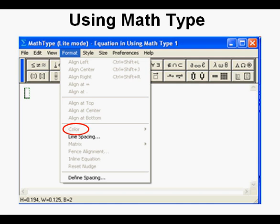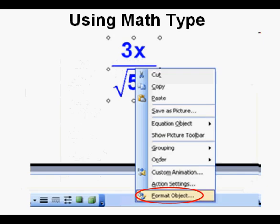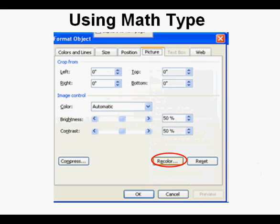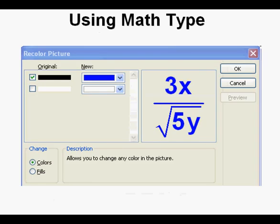However, I can still go to the format object mode by right clicking and going down to format object. And from here we can go to picture, recolor to change the color. And we go to the recolor again to change the color from the default black.